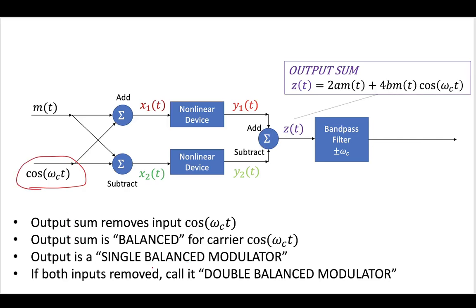Furthermore, we will call this a single balanced modulator, because it is balanced in terms of cosine, because the cosine is removed, but it is not balanced in terms of the message, because there is this message term. So this is just a single balanced modulator.